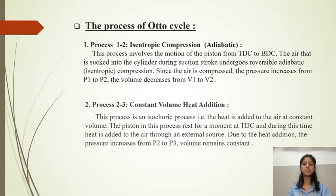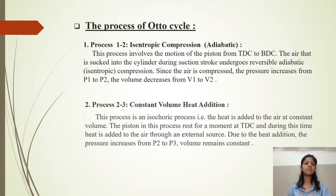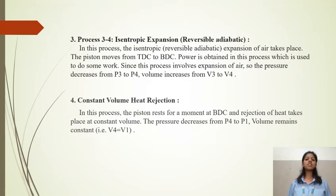The next process is 2 to 3: constant volume heat addition. This is an isochoric process where heat is added to air at constant volume. The piston is at rest for a moment at TDC, and during this time heat is added to the air through an external source. Due to the heat addition, pressure increases from P2 to P3 while volume remains constant.